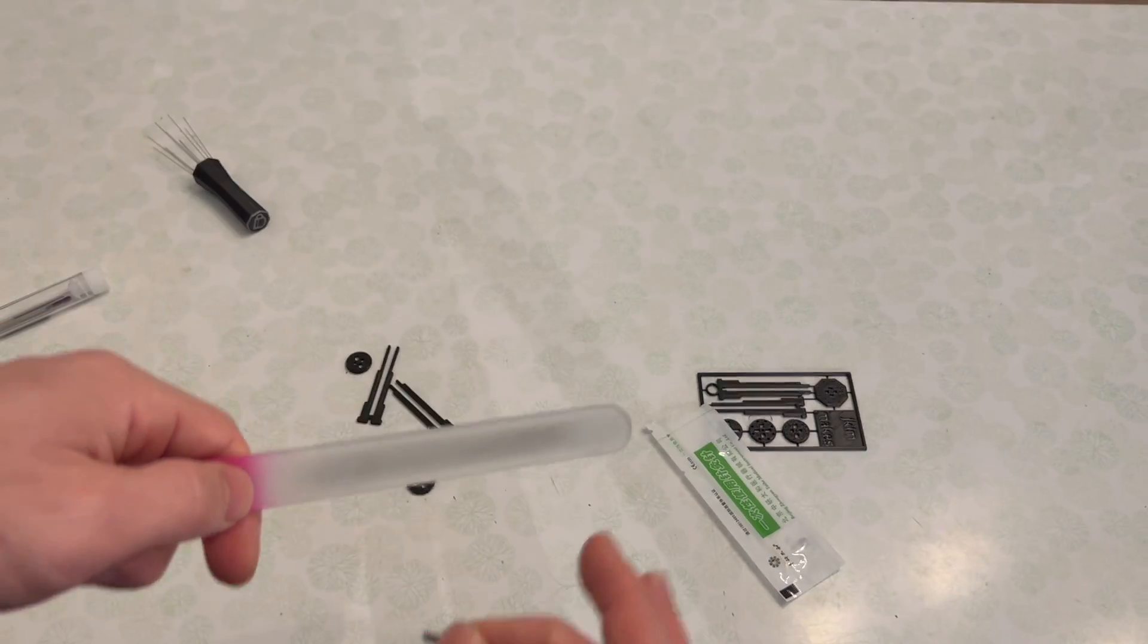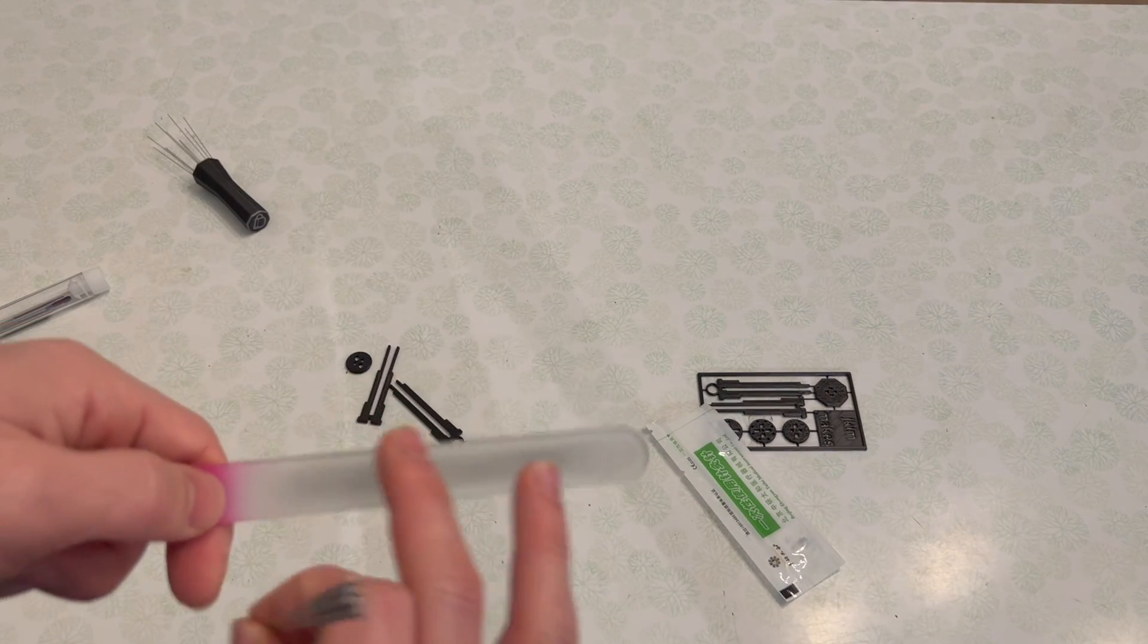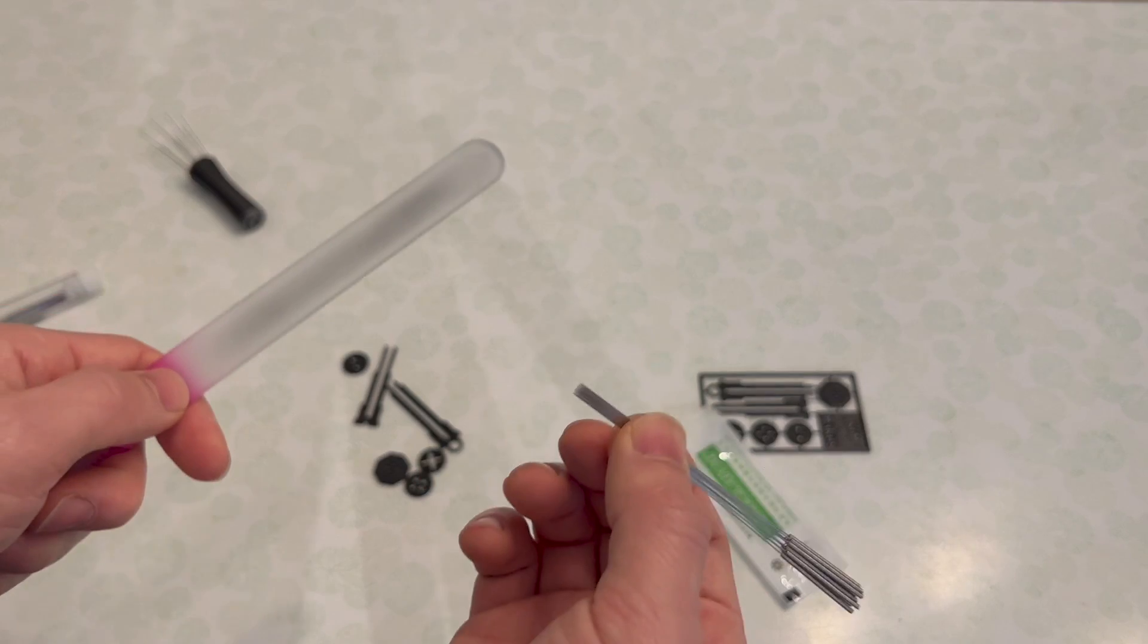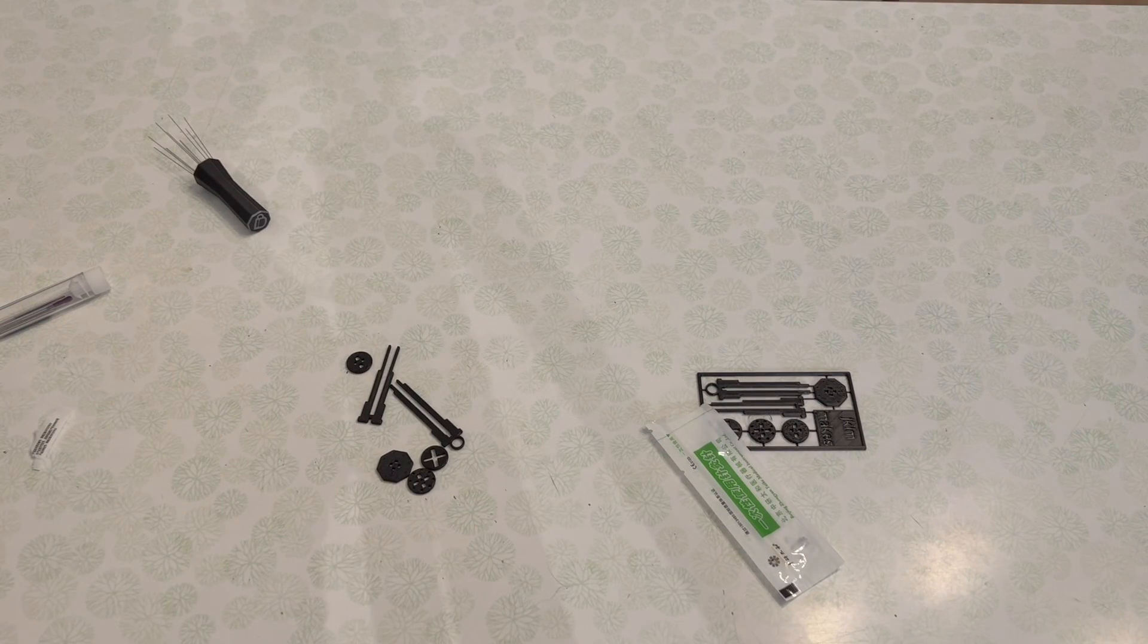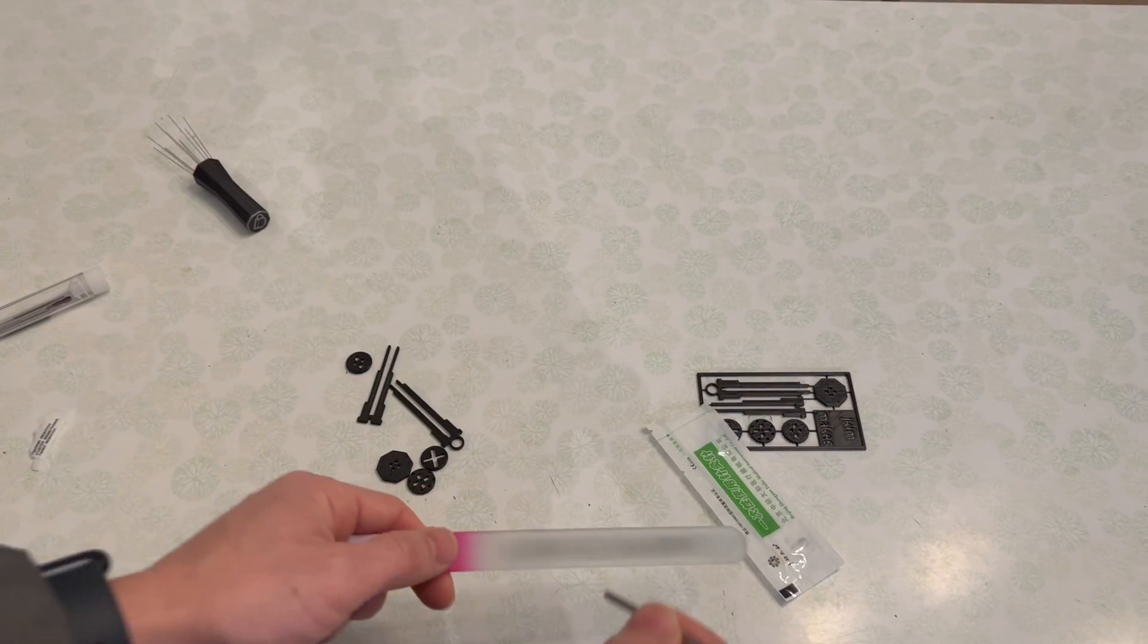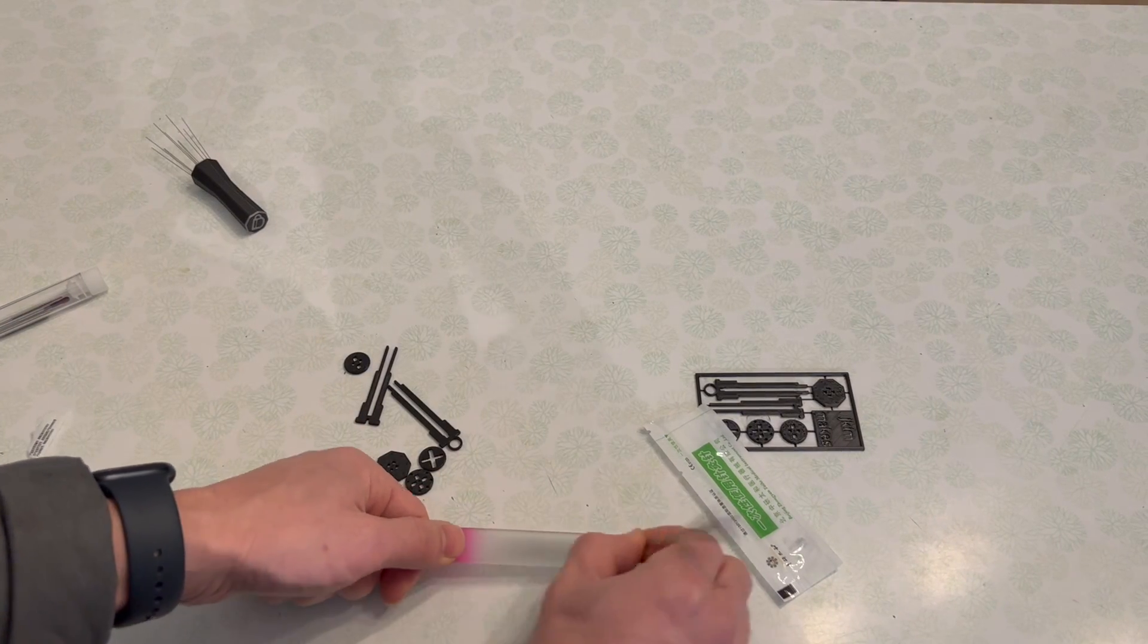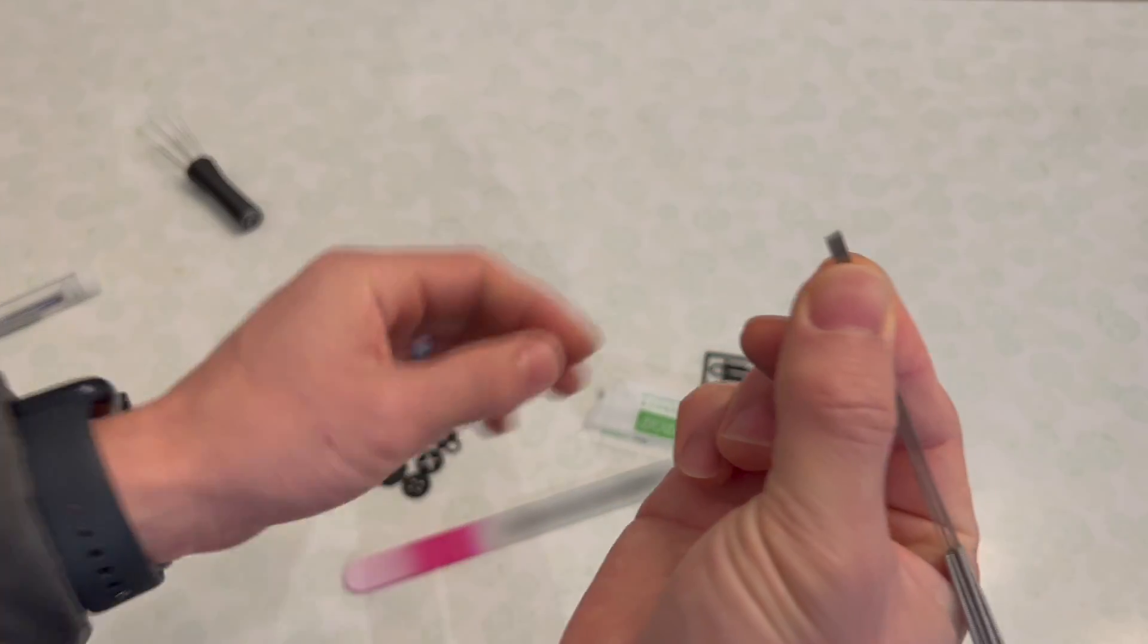Some people clip them with pliers - I don't like that, it kind of creates a hook at the end. What I have here is a glass nail file. You could literally use anything that's harder than metal and rub it against it. You could also use sandpaper or a metal nail file.